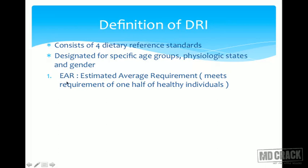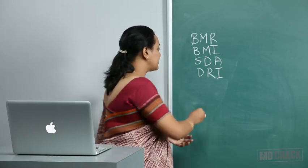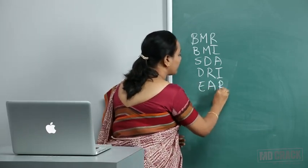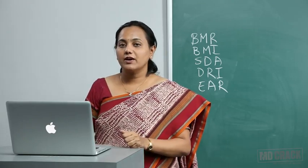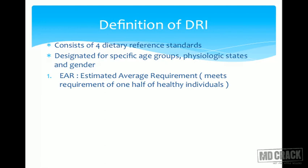The first component of DRI is EAR — Estimated Average Requirement. EAR meets the requirement of one half (50%) of healthy individuals in a given population group. For example, for adult males of a specific age, EAR is the amount of a nutrient sufficient to meet the needs of only half of that group.